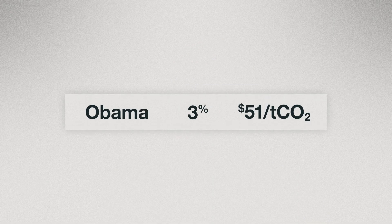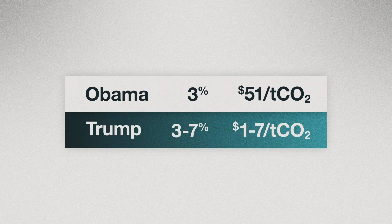During the Obama administration, the central discount rate was set at 3%, resulting in a social cost of carbon of around $51 per ton of CO2. During the Trump administration, the discount rate ranged between 3 and 7% — the higher rates based on the assumption that the U.S. economy would grow rapidly. Additionally, the Trump administration only factored in U.S. damages as opposed to global damages, resulting in a social cost of carbon between $1 and $7.